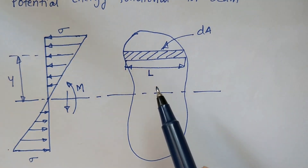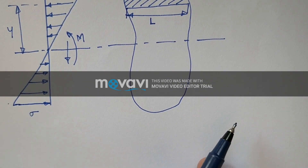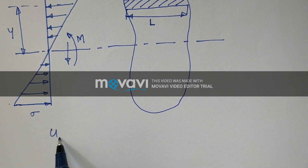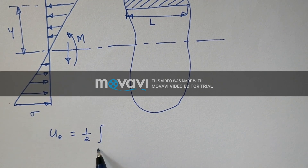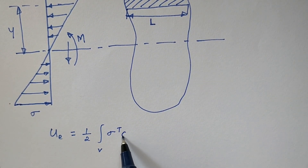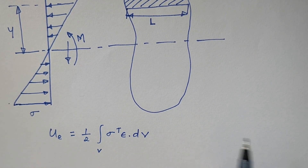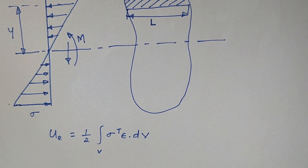Let us consider the potential energy functional equation. So uE, the potential energy functional, can be written as 1/2 over the volume of sigma transpose times epsilon dV. This is the potential energy functional equation considered for the beam element.